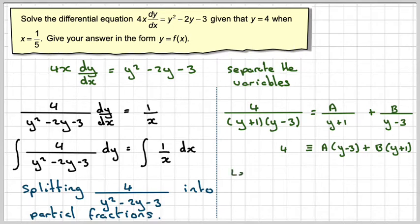Next, to make these zeros, put y = -1. We're going to have 4 = -1 - 3, which is -4A. That means A has to be -1.